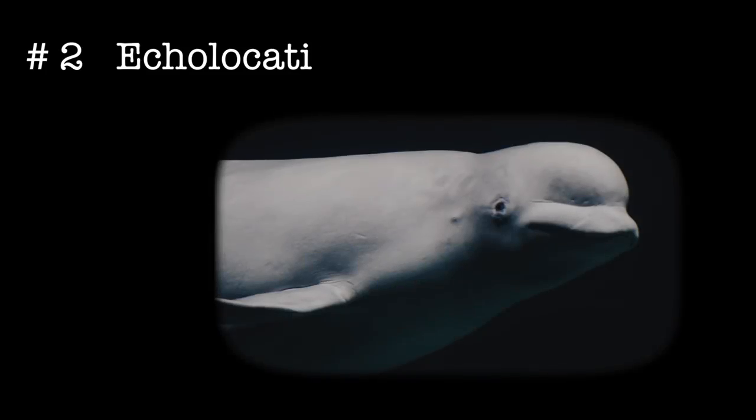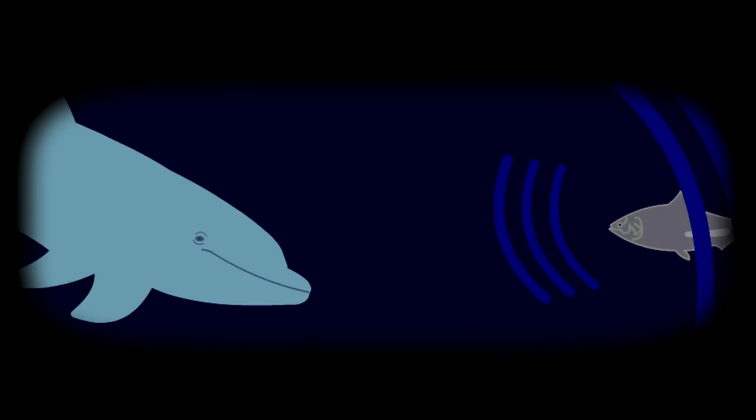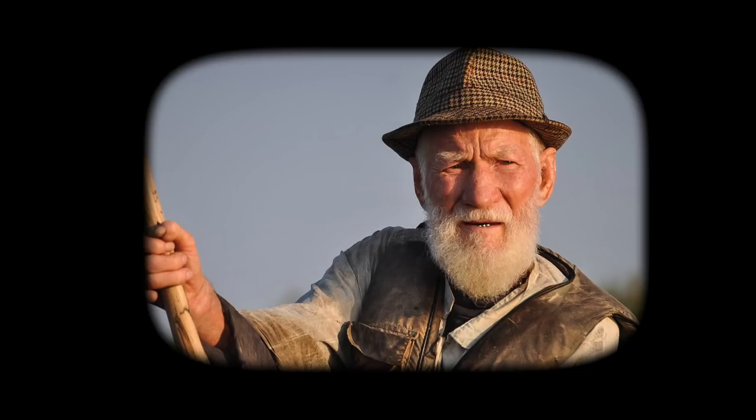Number two: echolocation. Echolocation is a type of biological sonar that allows animals to sense their surroundings by emitting calls into their environments and listening for the echo that returns. By echolocating, an animal can tell how far an object is, which is useful for hunting and navigation. This unique trait has sprung up on many occasions in evolution. Toothed whales and dolphins, bats and shrews, and even some humans are capable of echolocating.